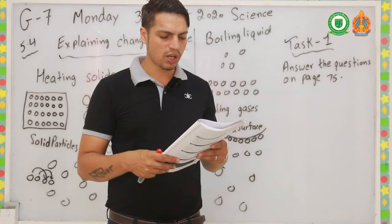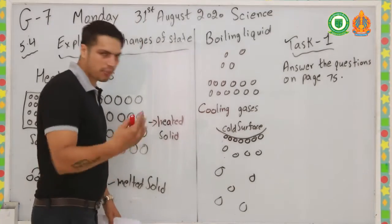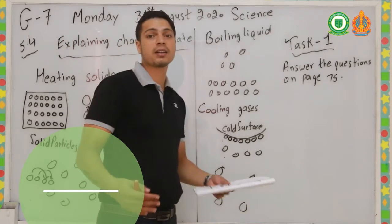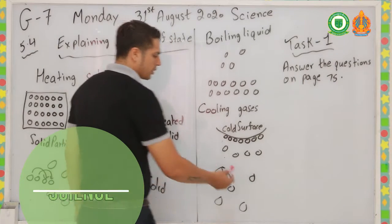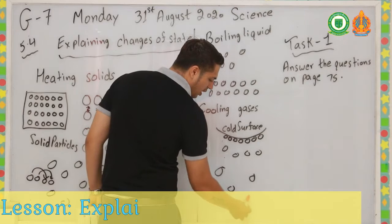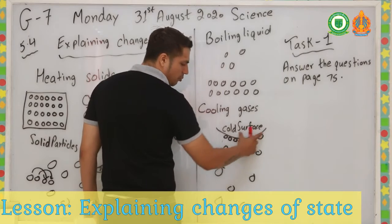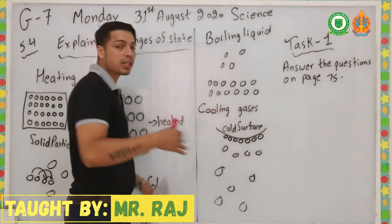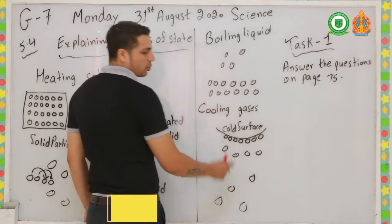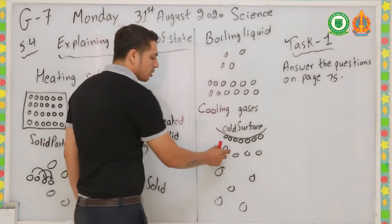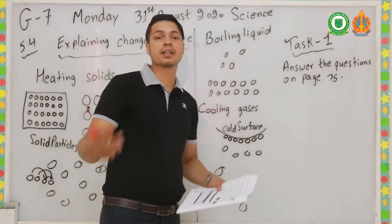As the gas particles touch the cold surface, the particles move less and get closer together, forming a liquid. Looking at the diagram: gas particles can move freely, but when they touch the cold surface, they can no longer move quickly — they move slowly, come together, start to have attractive forces, and form a liquid. That process is called condensation.